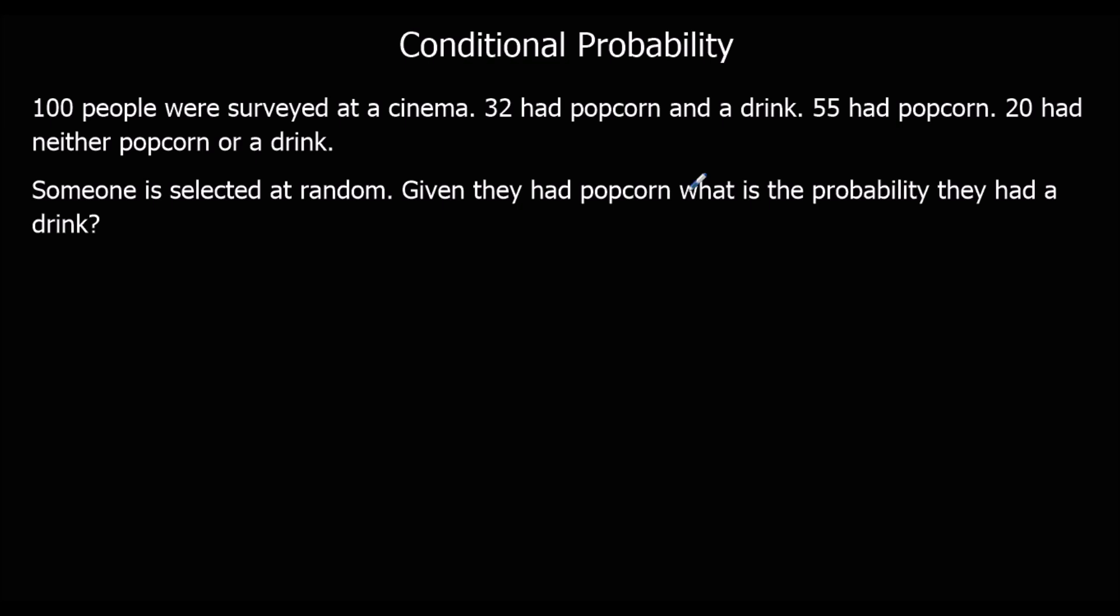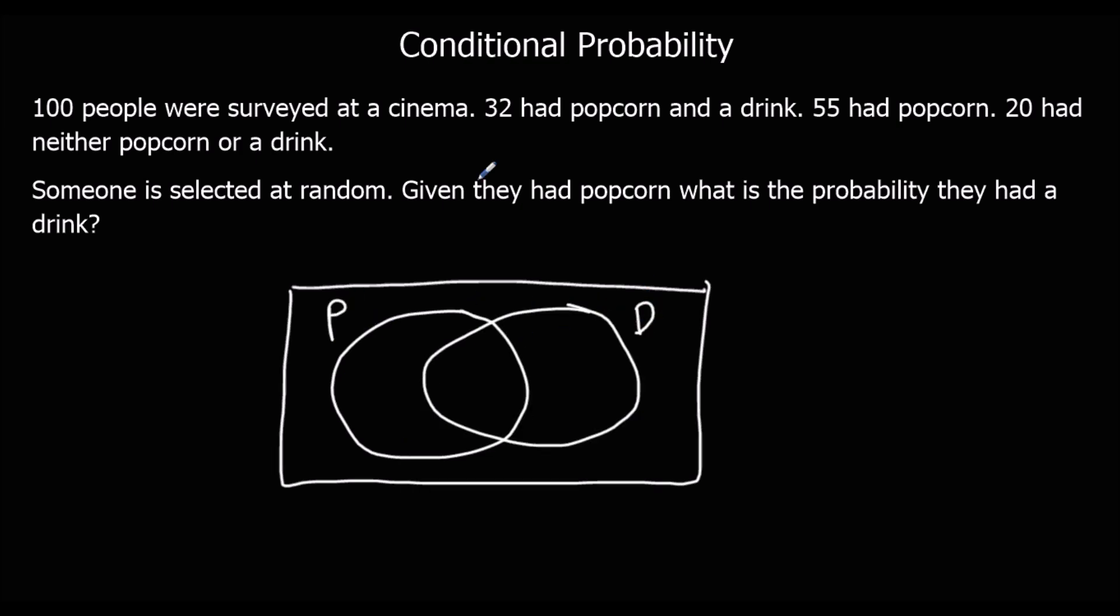So we've got 100 people surveyed at a cinema. 32 had popcorn and a drink. So we've got popcorn and a drink. 32 had both. 55 had popcorn, so we need another 23. And 20 had neither. So 20 is here.